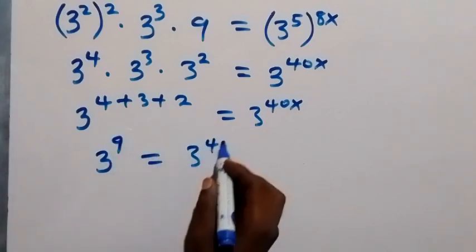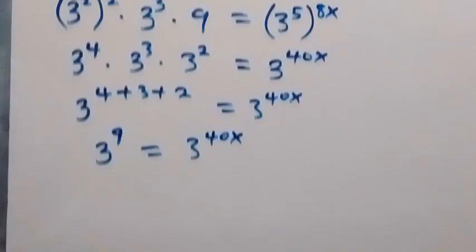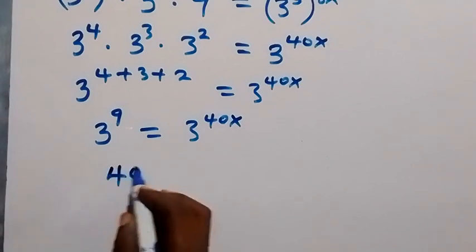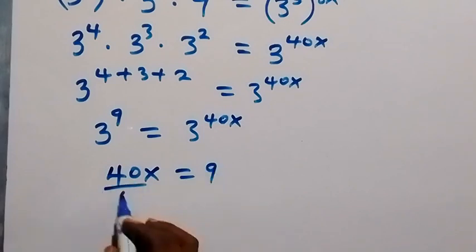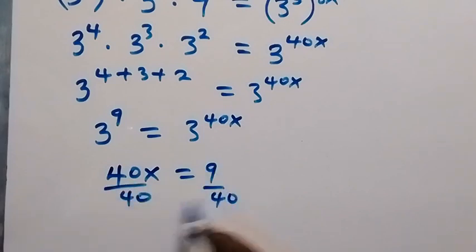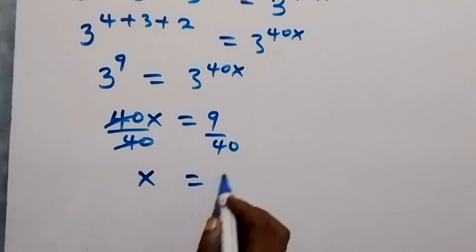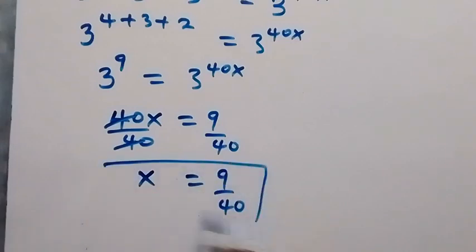Since the bases are the same, we can equate the powers. Then we have 40x equals 9. Dividing both sides by 40, the 40 cancels out and x equals 9 over 40. So we got x equals 9/40.